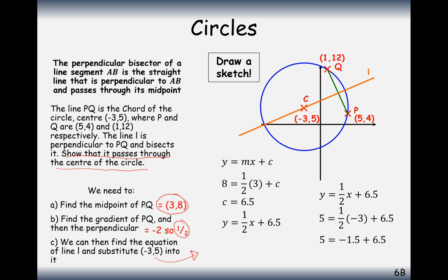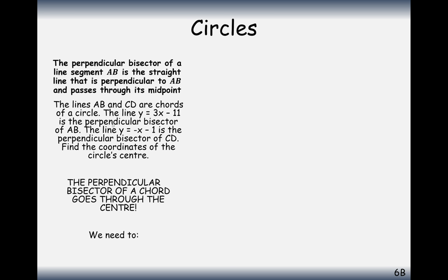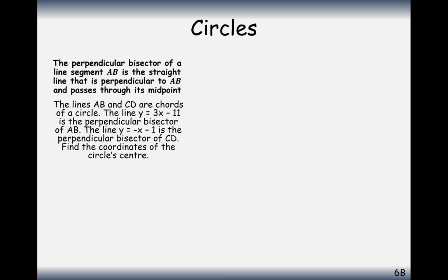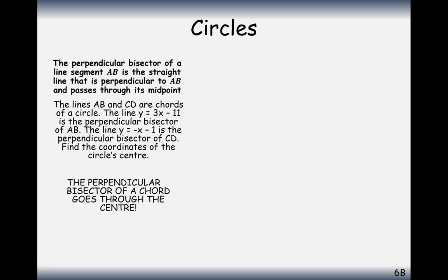We're combining key ideas about equations of straight lines, midpoints between two coordinates, and properties of circles into one big question. The last question: lines AB and CD are chords of the circle. The line y equals 3x minus 11 is the perpendicular bisector of AB, and the line y equals minus x minus 1 is the perpendicular bisector of CD. Find the coordinate of the centre of the circle.